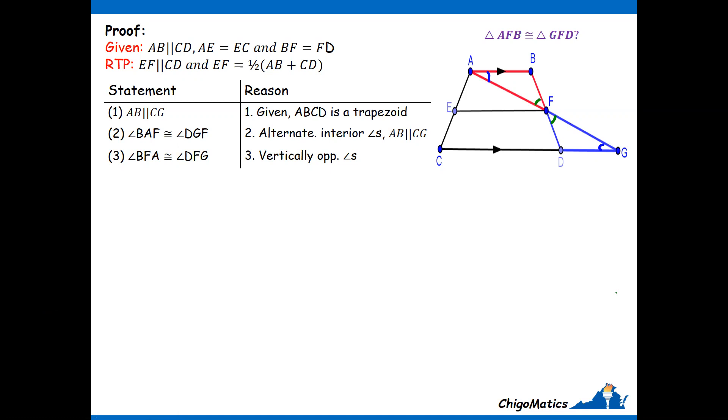What I am left with is the side. The side, I already told you that BF equals FD, that is given information. We are simply saying this side is equal to that one. I now have the three components to conclude that the two given triangles, AFB is congruent to triangle GFD. These two triangles are congruent by angle-angle-side.